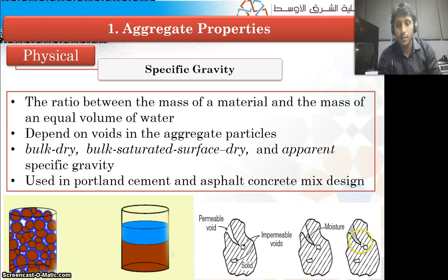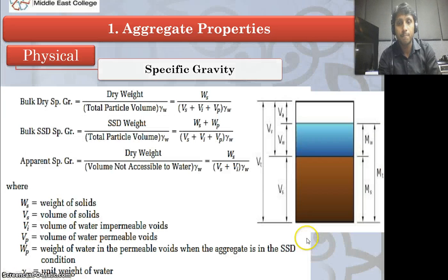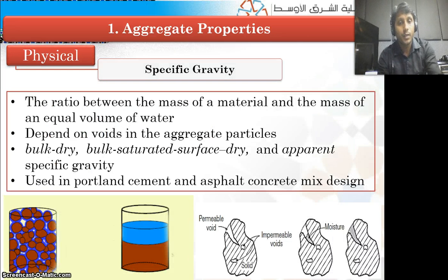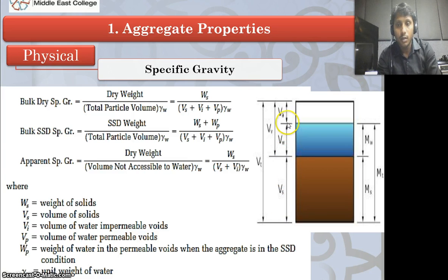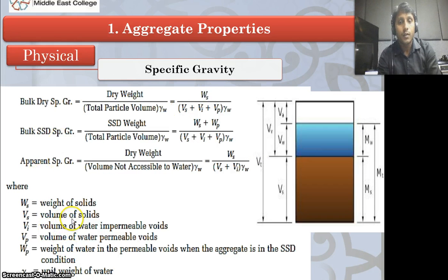Observe here — the moisture is filling in this void, so these are permeable voids, and these are impermeable voids. We have formulas for bulk dry specific gravity, bulk saturated surface dry specific gravity, and apparent specific gravity. In the diagram, you can observe the volume of sand, volume of water, volume of air, and V-gamma representing water and air together. V-T is the total volume. You can easily compare what W-S and V-S refer to as mentioned in the formula.